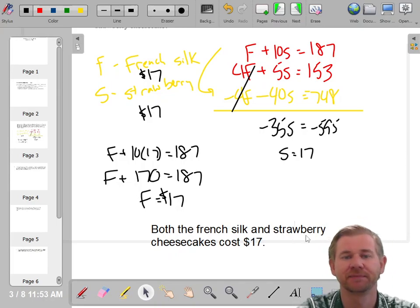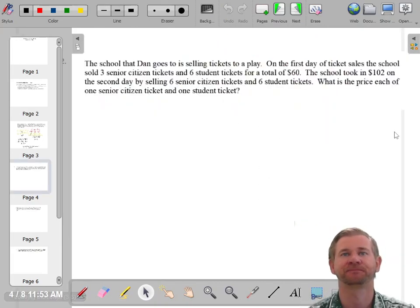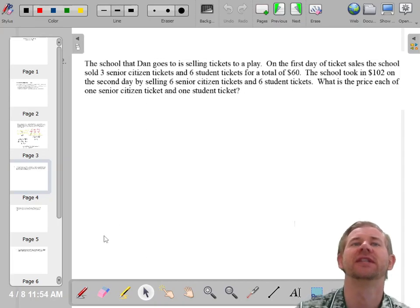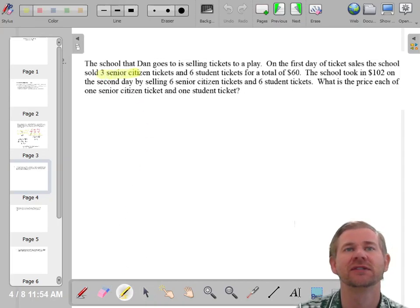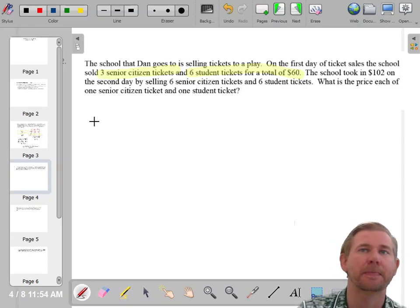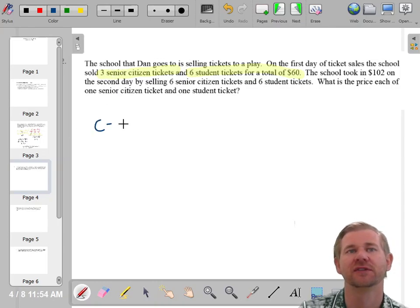Both the French silk and strawberry cheesecakes cost $17. That's it. We're going to write a system. We're going to solve the system. Not a big deal. Let's try another one. The school that Dan goes to is selling tickets to a play. And on the first day, they sold three senior citizen tickets and six student tickets for a total of $60. So let's say, if I use S, that's going to be a problem. So let's do C for senior citizen.